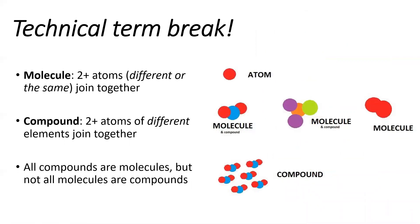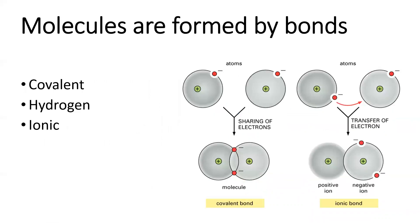A quick definition: a molecule is two atoms — whether the same or different — coming together. A compound is two atoms of different elements coming together. All compounds are molecules, but not all molecules are compounds. Be sure you understand the difference between a molecule and a compound.